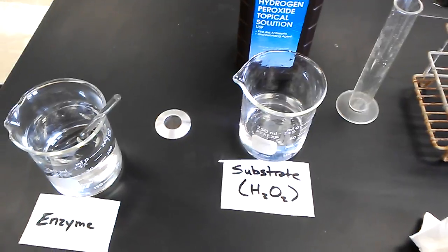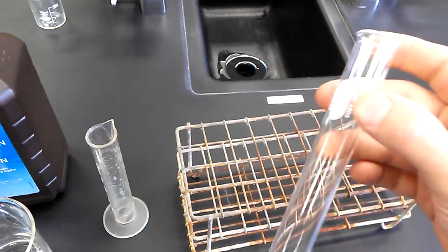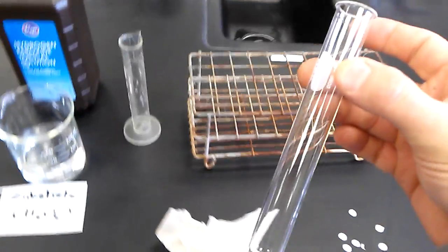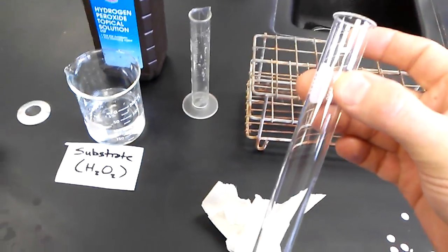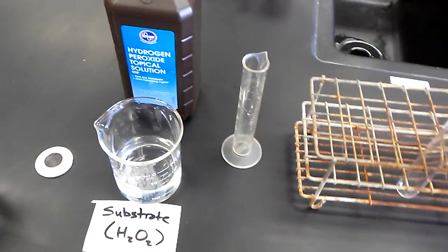Your directions will call for you filling a test tube, seen here. This test tube you are going to add 20 milliliters of your substrate to. So we're going to pour 20 milliliters of substrate into our graduated cylinder, and then we're going to add that to the test tube.